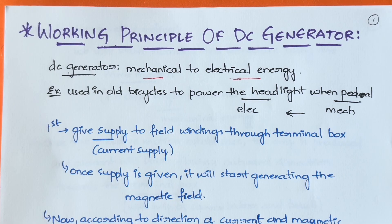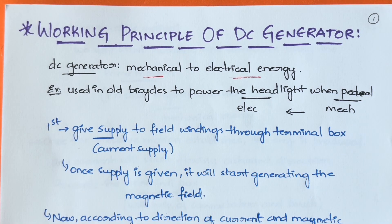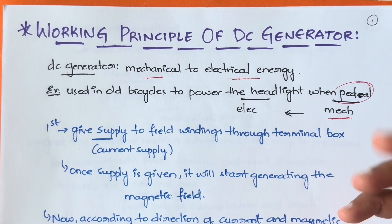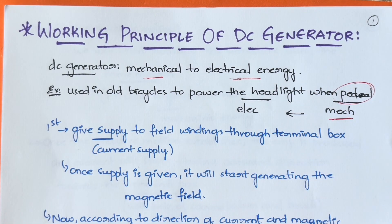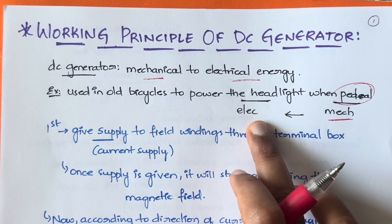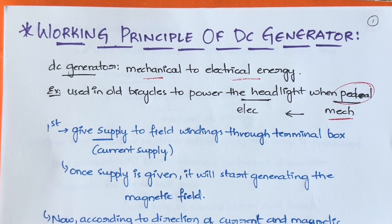A basic example to understand this easily is old bicycles. If you do pedaling, the headlight will start glowing — in normal scenarios it will not glow, only when you pedal. The pedaling is mechanical energy you're doing with your legs, and because of that pedaling the light glows due to electricity. So mechanical energy is being converted into electrical energy — this is the working principle of a DC generator.